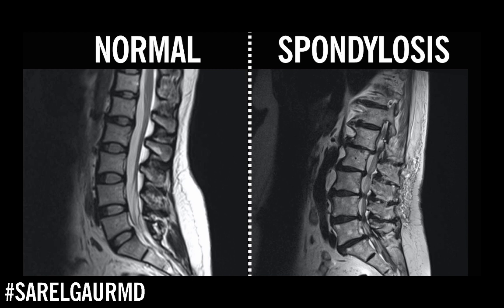Moving to the spinal cord and cauda equina — the spinal cord is just out of plane on this image. Coming down to the cauda equina, this looks very abnormal. Where we had all this white CSF signal surrounding the cauda equina in the normal spine, that's just not the case here. This is a very tight central canal. At certain levels where there's a disc bulge and hypertrophy of the ligament, there is actual pinching of the cauda equina at multiple levels. We call that spinal stenosis, and you can see how that could definitely result in symptoms or pain — nerve roots being compressed by surrounding structures.